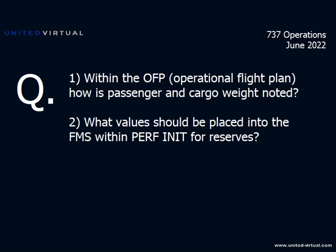Thomas Bergman asks: within the OPF, how is passenger and cargo weight noted, and what value should be placed into the FMS for reserves? For reserves, it's dealer's choice — up to the crew. We have a minimum value, which is the FAR 45-minute reserve for your IFR clearance. That's not required — it's for dispatch purposes only. You can land at your alternate with whatever fuel you want. You can land with one pound, though you might have to answer for why you declared an emergency. There's nothing in the regs that says you have to land at an alternate with a certain amount of fuel. Once you hit TOGA, it's up to you as captain.